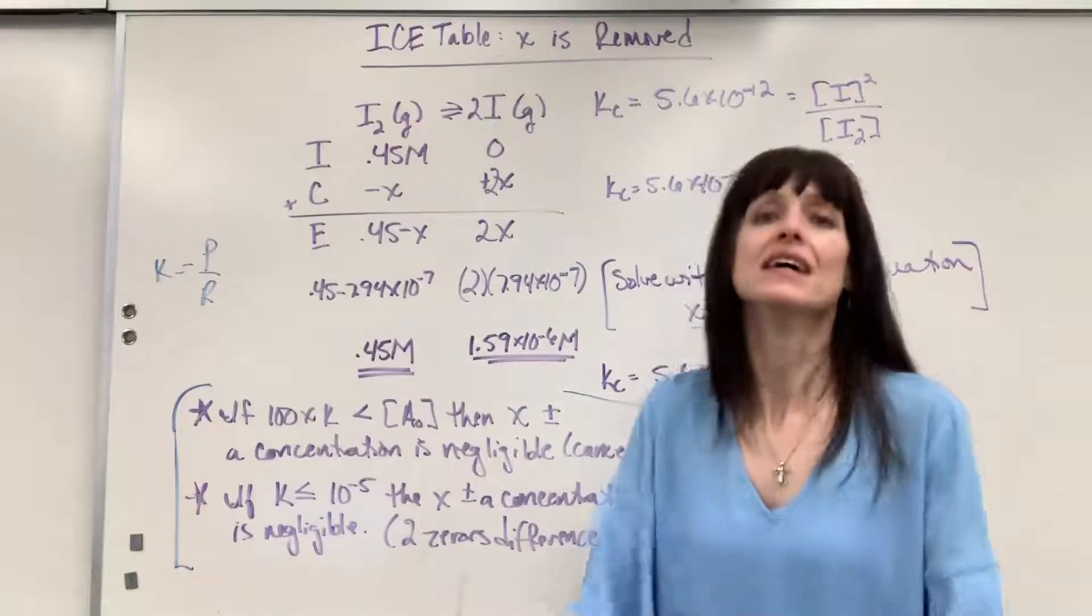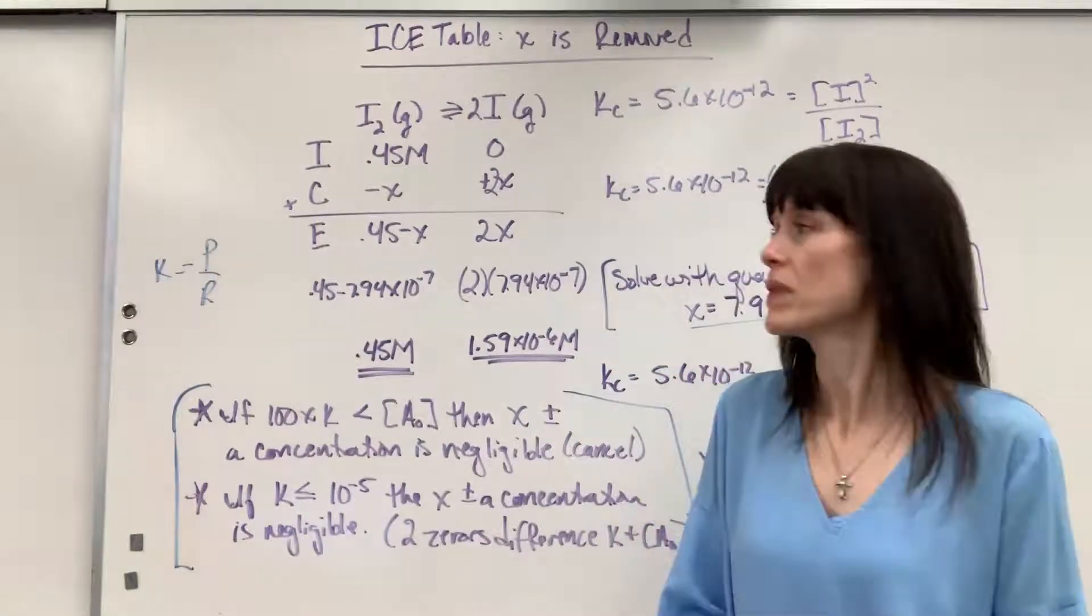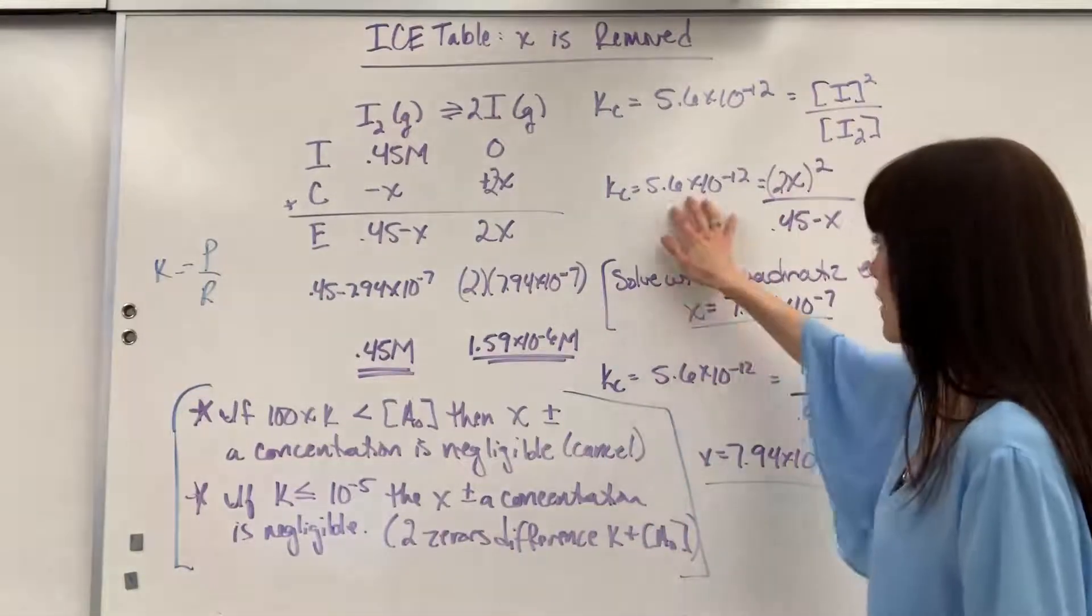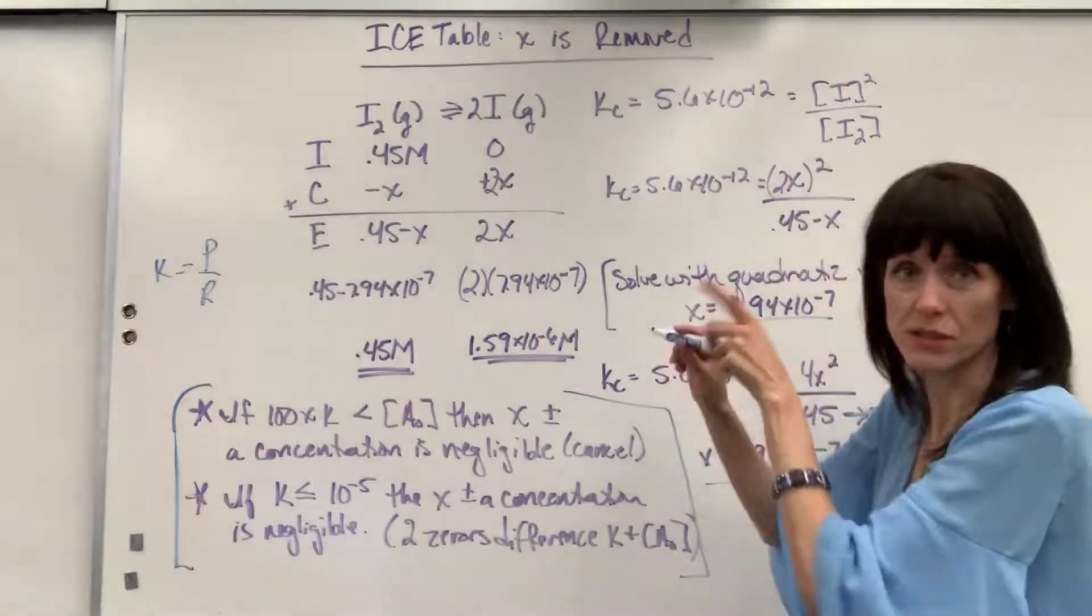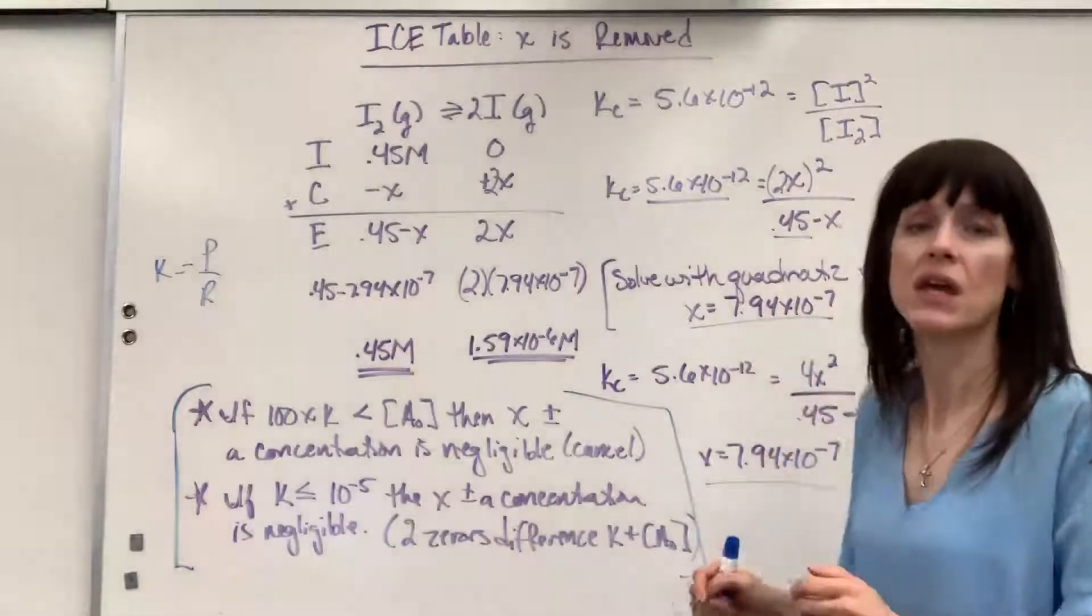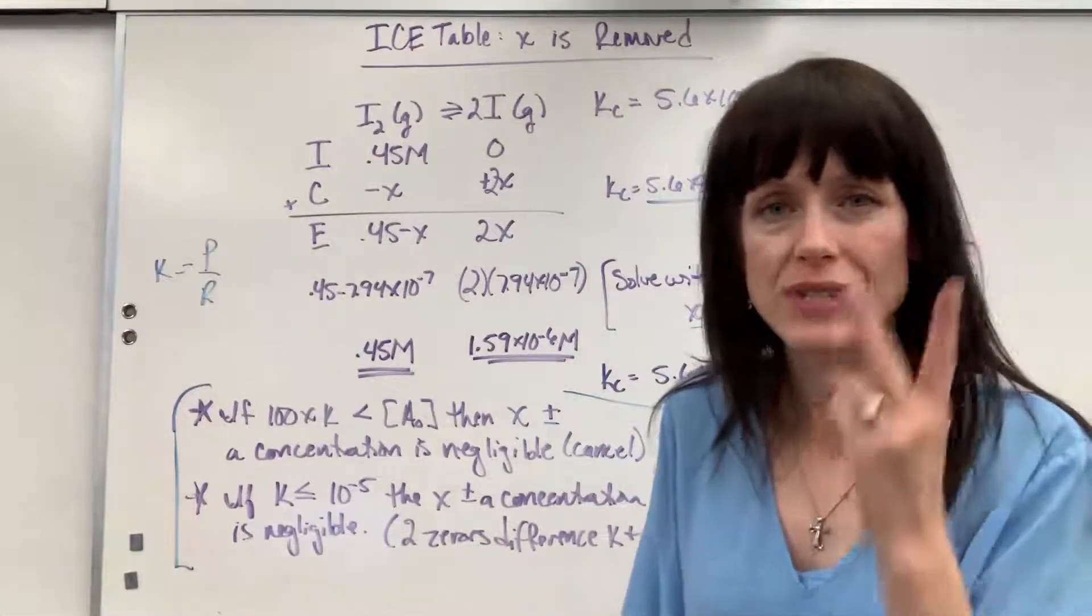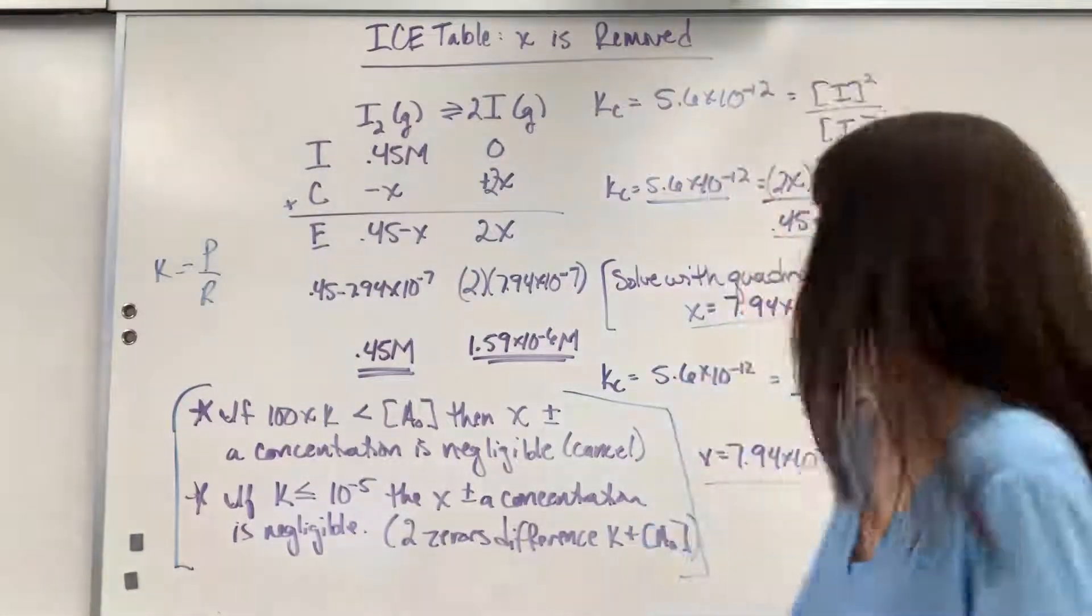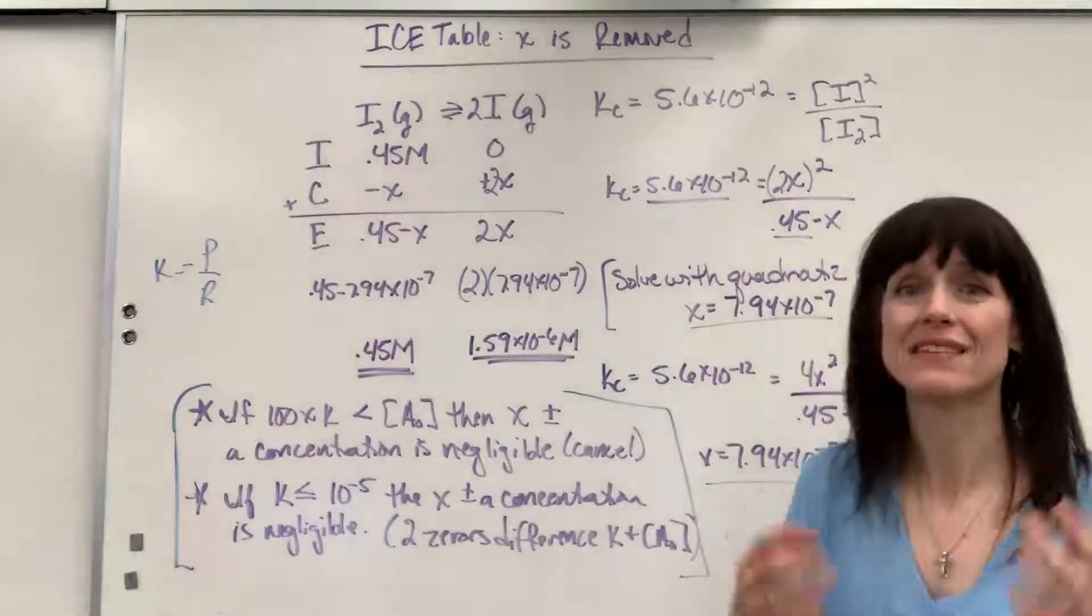So everything said and done, here is your takeaway. When you look at your K value, compare it to the concentration, okay? So this is what you're comparing, the K value to the concentration that's next to the x. If there is a difference of two zeros, okay, a factor of two zeros. So this is a factor of 11 zeros.